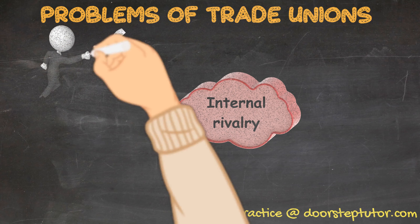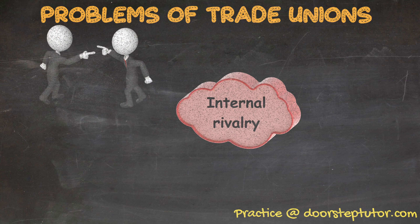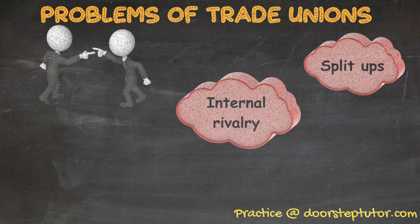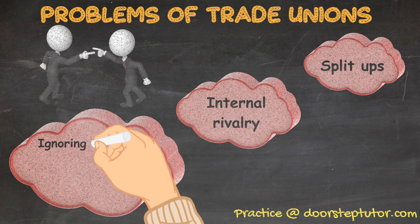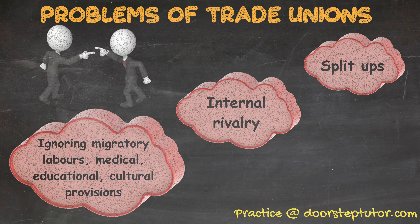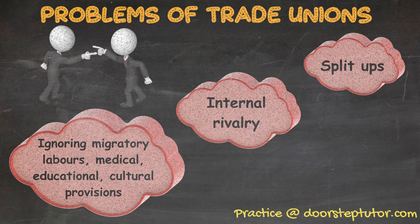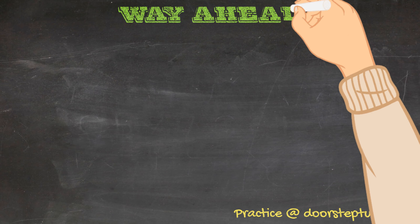Coming to the problems: internal rivalry is a very big problem. If there is no unity among the trade union members, it is going to cause bigger problems at the management level. Sometimes trade unions split up because they are not able to continue with the leaders or agree with each other. They sometimes also ignore a few factors like migratory laborers — the needs of permanent workers and migratory laborers are very different. Other aspects like medical, educational, and cultural provisions are also seldom addressed, which account for a big part of an individual's life.